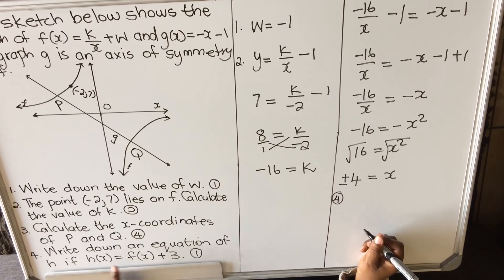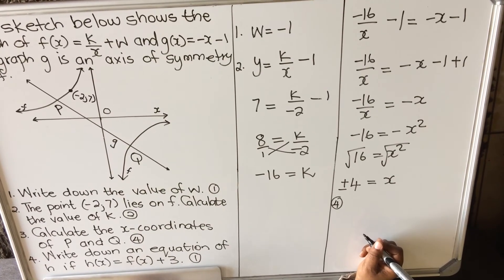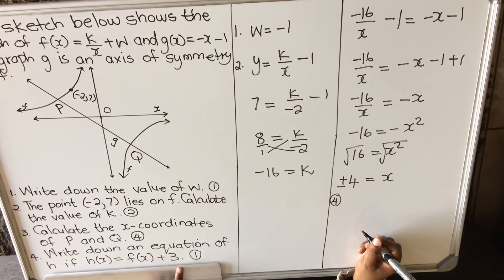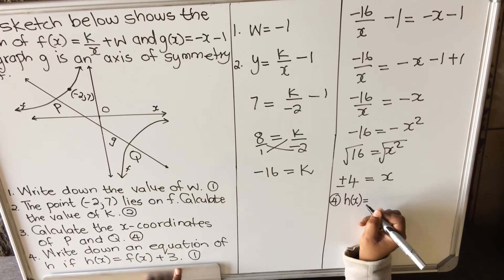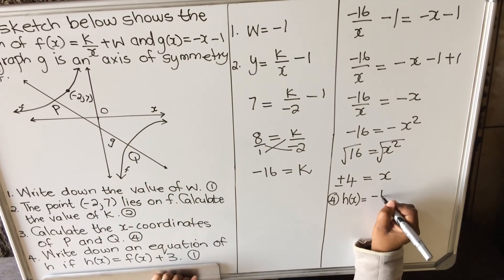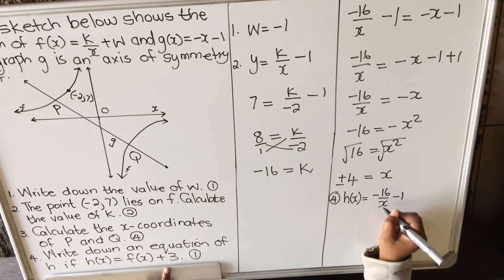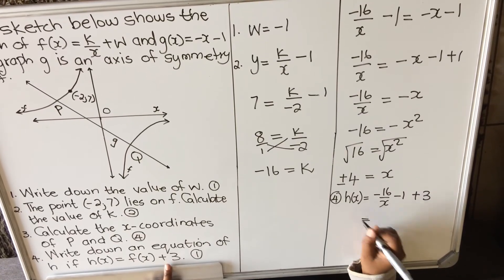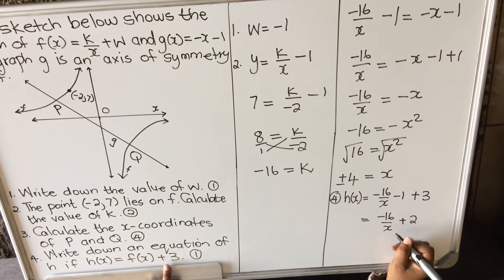Number four: write down the equation of h, where h(x) equals f(x) plus 3. My f(x) is the hyperbola: negative 16 over x minus 1. Adding 3 to that gives h(x) equals negative 16 over x minus 1 plus 3, which simplifies to h(x) equals negative 16 over x plus 2. That's the new function, and that's why it's only one mark.